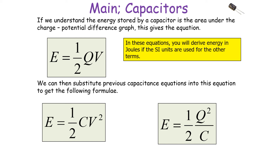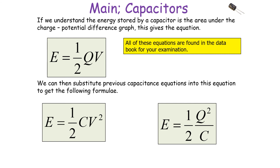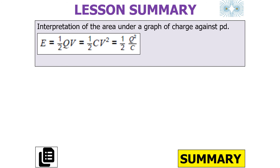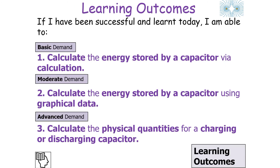These equations give energy in joules when SI units are used: farads for capacitance, volts for potential difference, and coulombs for charge. All of these equations are found in the data book for your examination. To summarise today's lesson: we understand that the area under a graph of charge against potential difference leads to E equals one half QV, E equals one half CV squared, and E equals one half Q squared over C. We can calculate the energy stored by a capacitor via calculation, using graphical data, and calculate physical quantities for a charging or discharging capacitor.